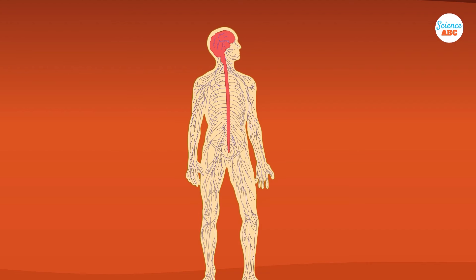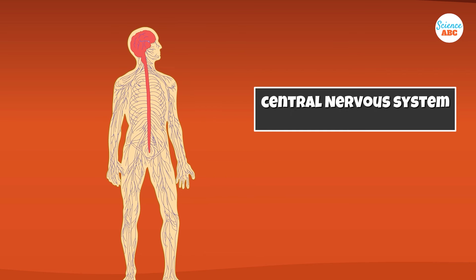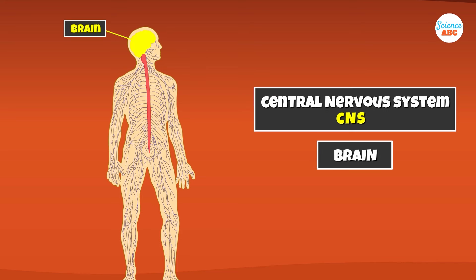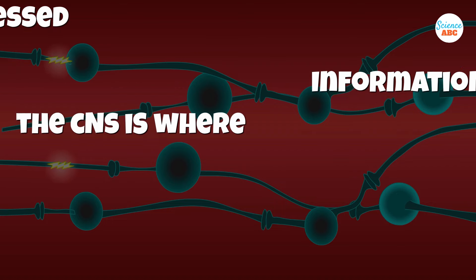In the human body, the nervous system has several parts that we've broadly divided as follows. In the midline of the body lies the central nervous system, or CNS, consisting of the brain and spinal cord. The CNS is where information is processed and integrated, the master controllers, so to speak.